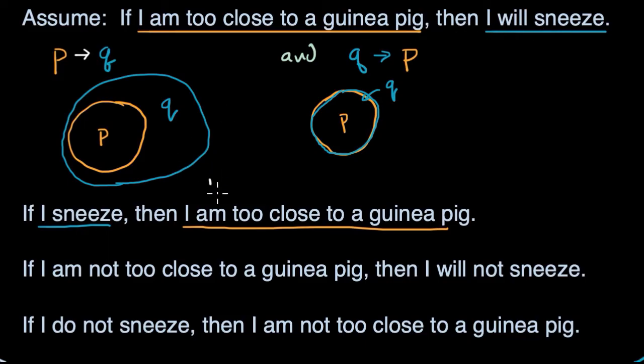You would say, if and only if, only if P, I am too close to a guinea pig, then, then Q.